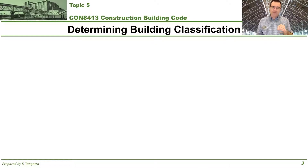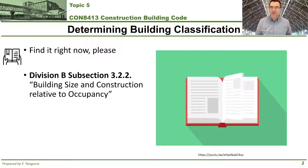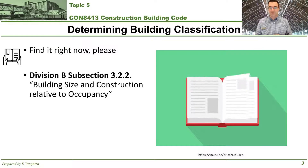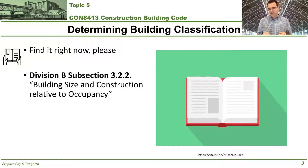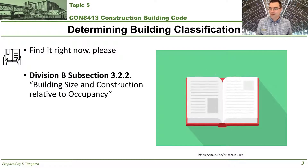For today's topic we're going to learn how to classify a part 3 building according to subsection 3.2.2. You're welcome to pause this video while you go grab the Ontario Building Code and find subsection 3.2.2 in division B, volume 1. You'll know it's the right one because it's titled "Building Size and Construction Relative to Occupancy."